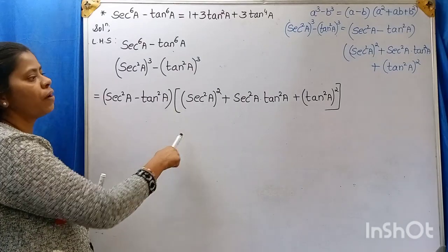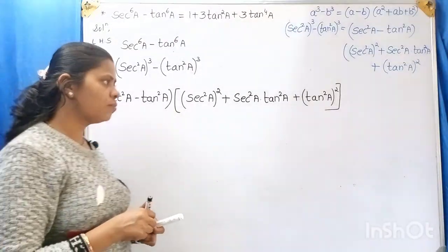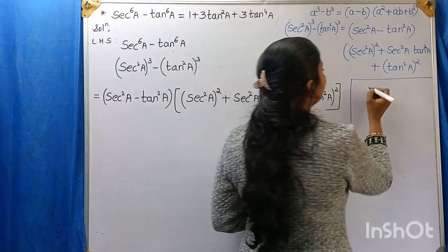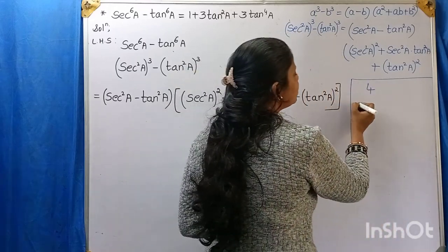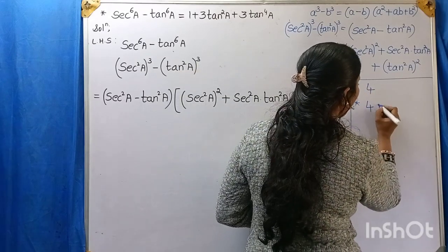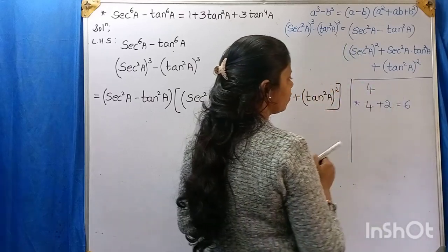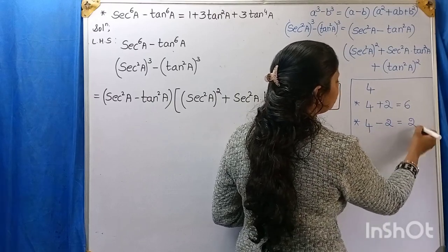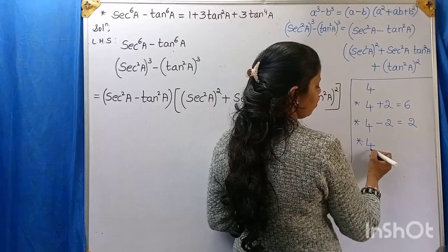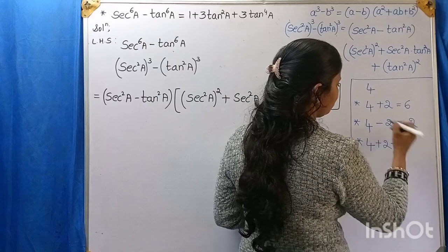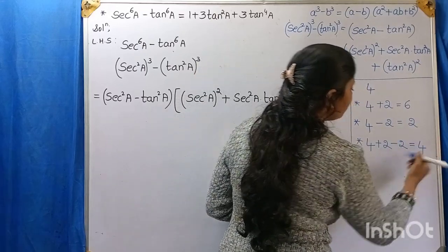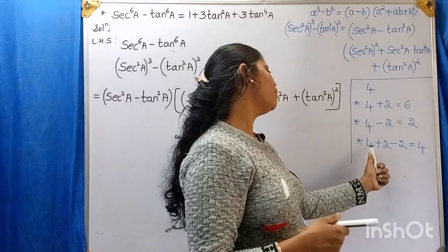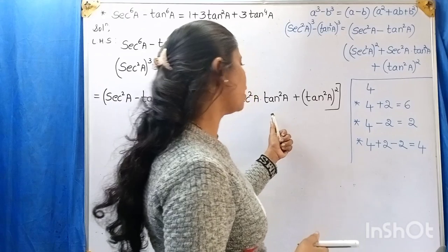Before continuing, let me explain something with an example. Imagine you have the number 4. If you add 2, it becomes 6. If you subtract 2, it becomes 2. But if you add 2 and subtract 2 at the same time, the value stays 4 — it does not change. So if you add and subtract the same number, the value does not change. We are going to apply the same thing here.